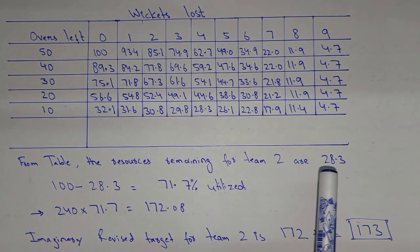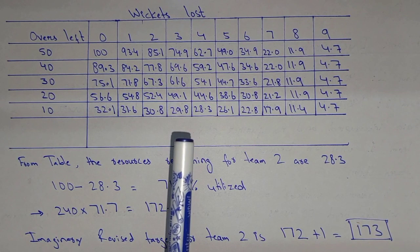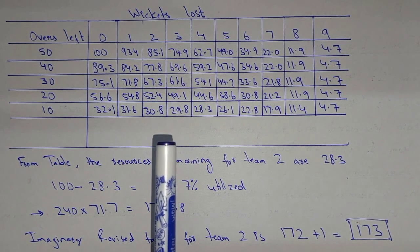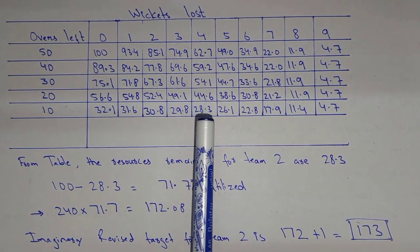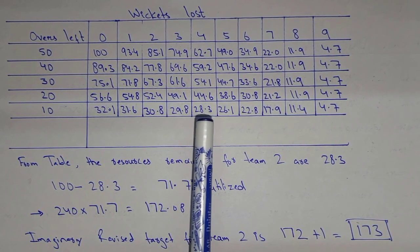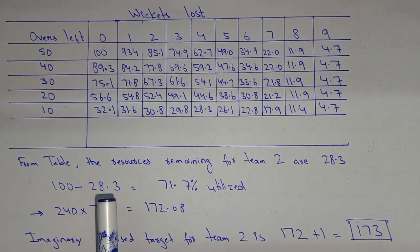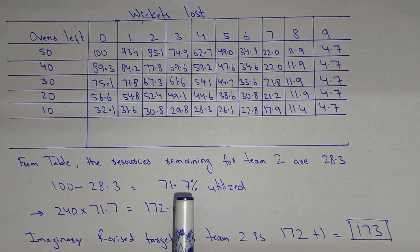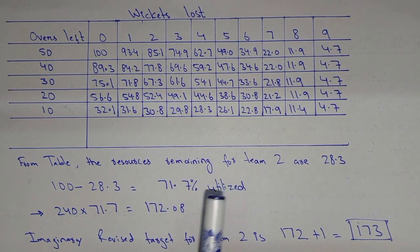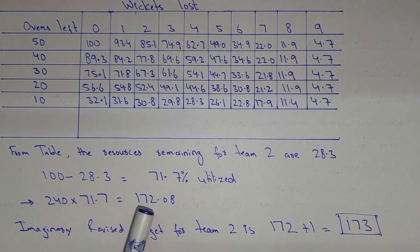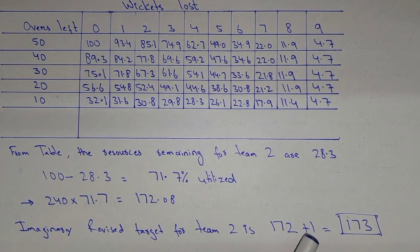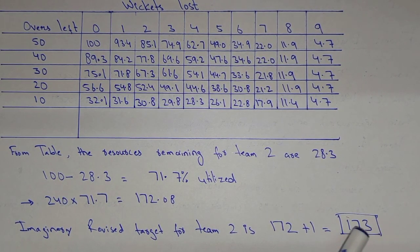From the table you can see that the resources remaining for Team 2 are 28.3%, because when rain interrupted, Team 2's score was 190 runs for the loss of 4 wickets with 10 overs left. So: 100 minus 28.3 equals 71.7% resources utilized by Team 2. Then: 240 (Team 1's score) multiplied by 71.7% gives 172.8, so the revised target for Team 2 is 172 plus 1, which equals 173.